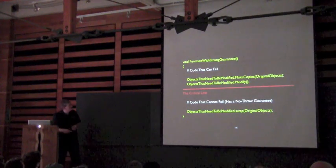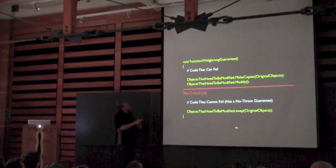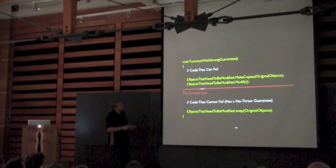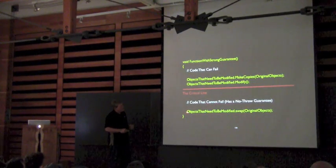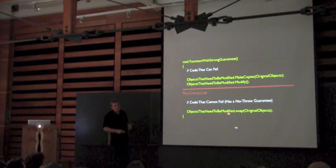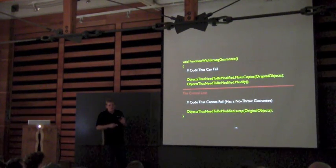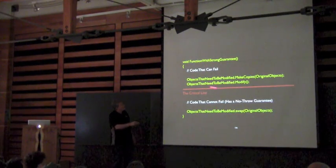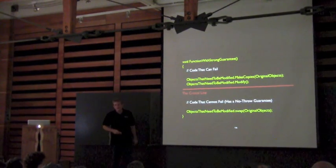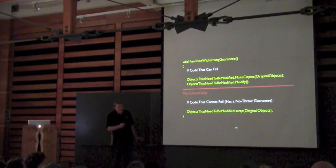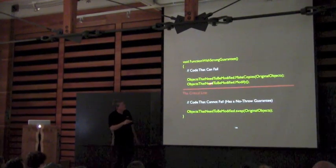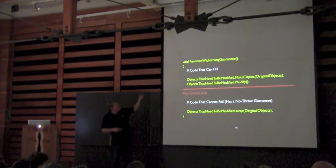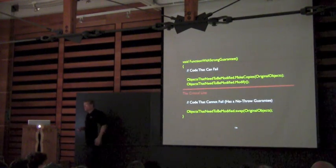Now let's talk about what I mentioned earlier — the critical line. The idea is that we want the strong guarantee. So we call all the code that might fail, and then, and only then, do we start calling code that can't fail to update our objects. In other words, if any exception happens, nothing's touched — because we only start modifying things after we've done all the code that can fail. That's why we call it the critical line — it separates the code that can fail from the code that does the modification.